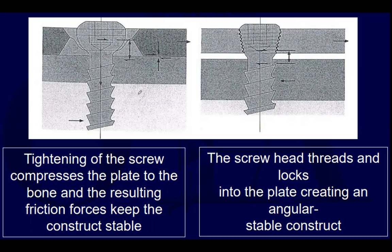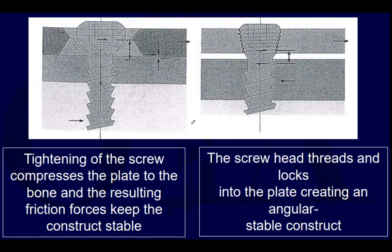Non-locking screws tighten the plate to the bone — the plate actually gets bent down to the bone to keep the construct stable. Locking screws thread into the plate, and once the plate is engaged by the screws and opposing bone, everything becomes one very angularly stable construct — everything locks together as one solid unit.